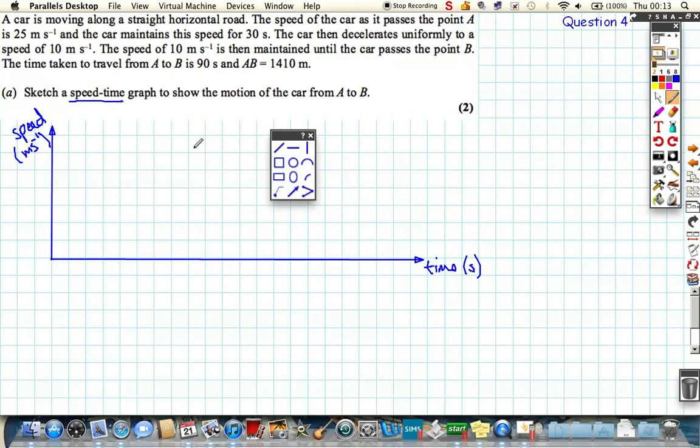Time in seconds and speed up here in ms⁻¹ relating to the question. Now it says that the car passes point A at 25 meters per second. So we need to label somewhere up here on the vertical axis a 25. It doesn't matter necessarily about the scale. This just happens that we've chosen a scale of 1 squared equals 5. But in the exam you don't need to give a scale.